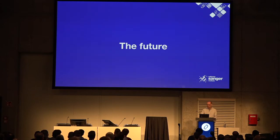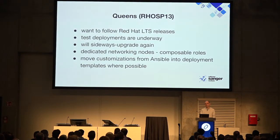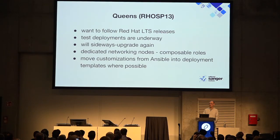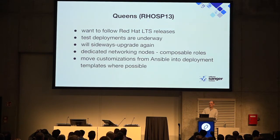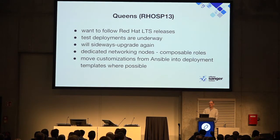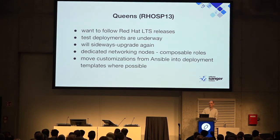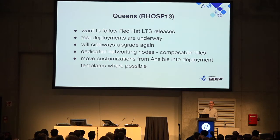That's where we've got to and how we got there. What's next? We're looking at Queens because we want to be on LTS releases. We've already started test deployments and we'll do the sideways upgrade — install Queens side by side with Pike and migrate users across. One thing we'll do differently is have dedicated network nodes, hoping that will prevent some of the RabbitMQ problems. We're also trying to move customizations out of Ansible into the deployment template, to reduce the 'oops, the deployer just overwrote my changes' problem.